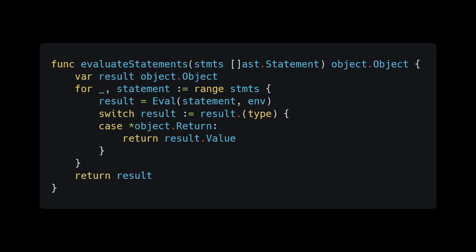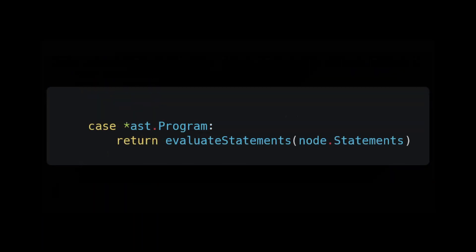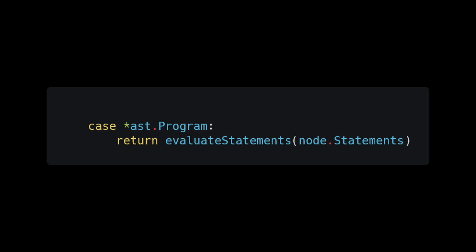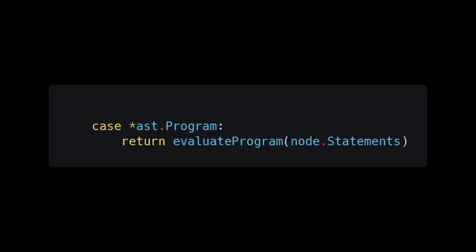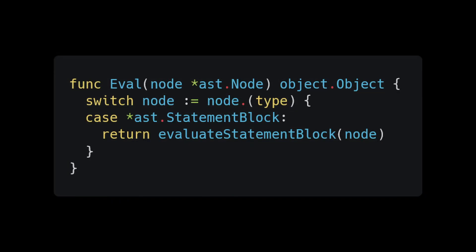To fix this, change our evaluate_statements method — first rename it to evaluate_program, then add an evaluate_statement_block method to untangle nested blocks. Go back to the switch case for the program node in the eval function and change the body to call the new evaluate_program method. In the new evaluate_statement_block method, copy the body from evaluate_program but instead of returning the wrapped object, return the whole return object itself. Update the statement block case to call this new helper method, and with that our return statements are fully functional.